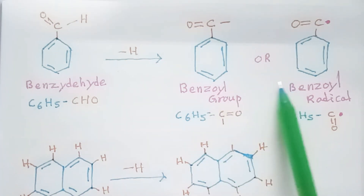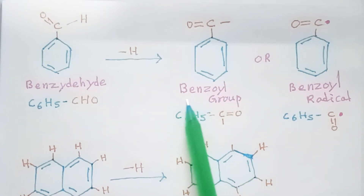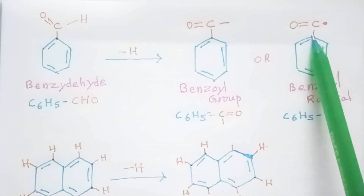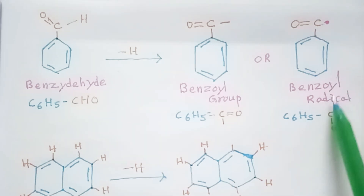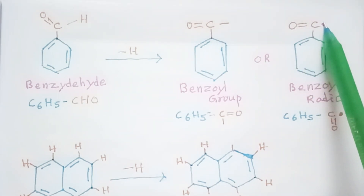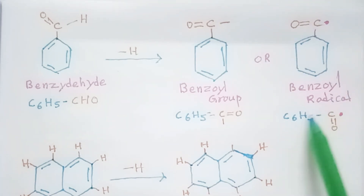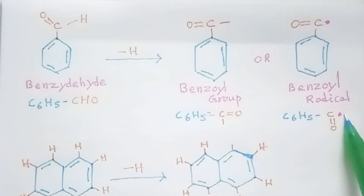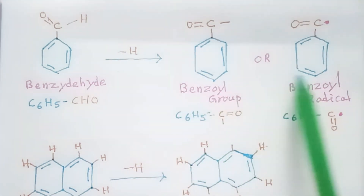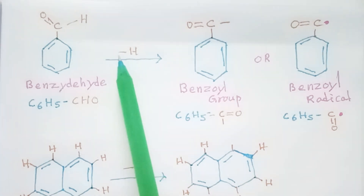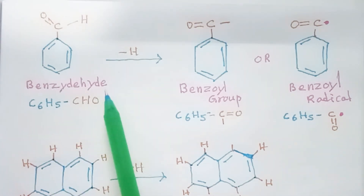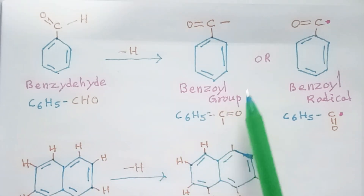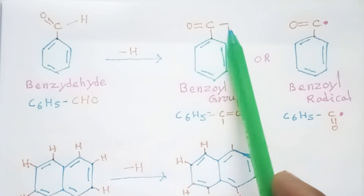This is called the benzoyl group. We can write this as C6H5–C=O with a radical dot on the carbon atom — this is the benzoyl radical. Both the benzoyl group and benzoyl radical are one and the same: both are formed by removing a hydrogen atom from benzene, represented with a free valence for the group and a free radical dot for the radical.